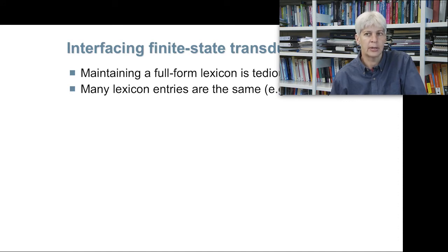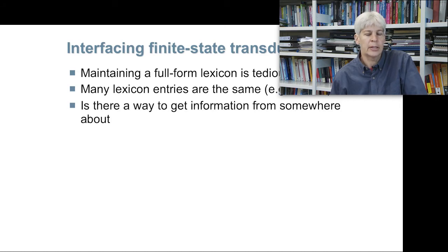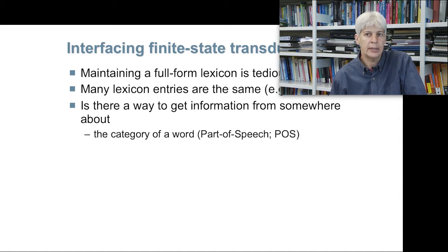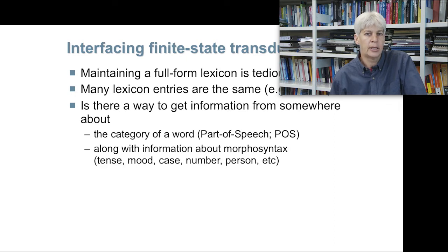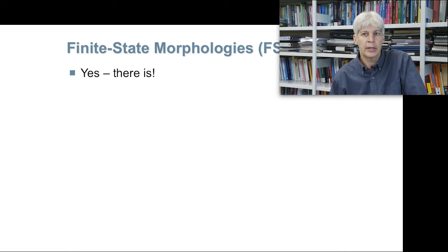You would like to not have to do that for every noun you need to add. The question is: is there a way to get that information from somewhere else? In particular, the information you need is the category of a word — the stem, the category or part of speech (POS). You would also like information about morphosyntactic features: is it plural, singular, present tense, past tense, what kind of case marking? And the answer to that is finite state morphologies, which I'll be abbreviating as FSM.